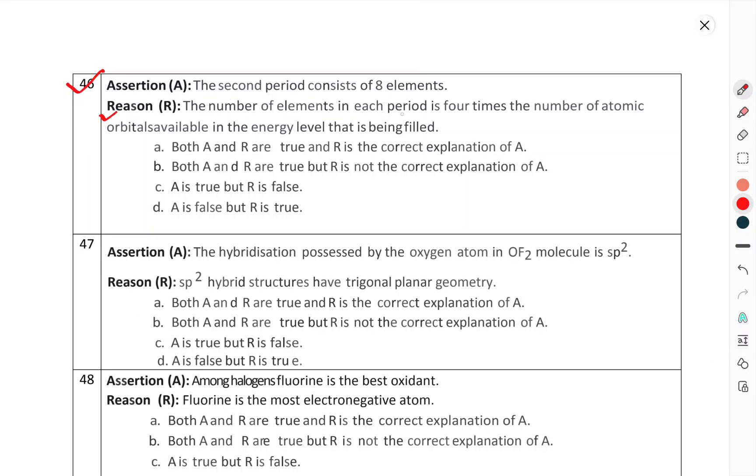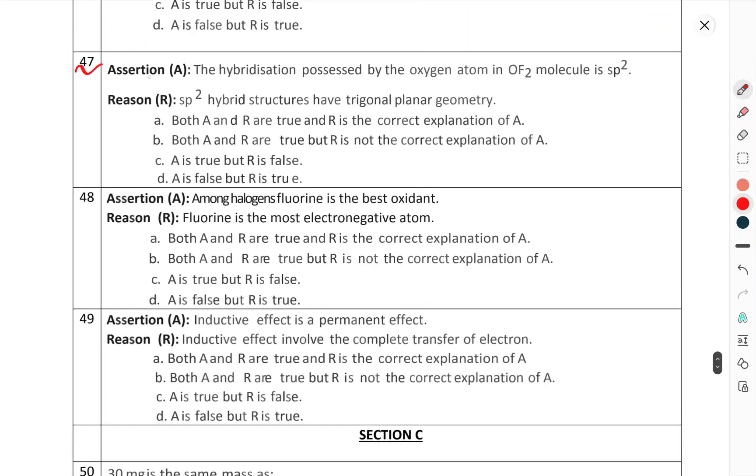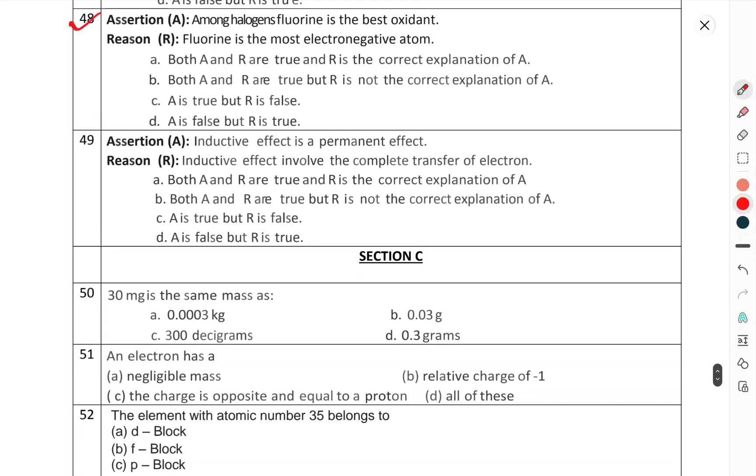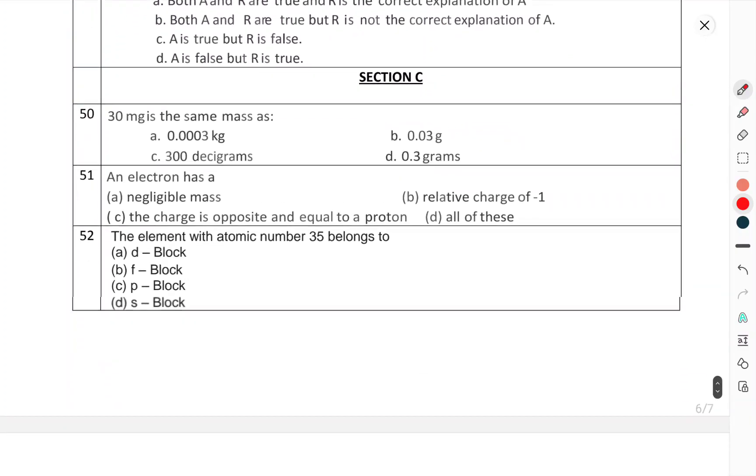Reason - The number of elements in each period is four times the number of atomic orbitals available in the energy level that is being filled. Question number 47: Assertion - The hybridization possessed by the oxygen atom in OF2 molecule is sp3. Reason - sp2 hybrid structures have trigonal planar geometry. Question number 48: Among the halogens, fluorine is the best oxidant. Reason - Fluorine is the most electronegative atom. Question number 49: Inductive effect is a permanent effect. Reason - The inductive effect involves the complete transfer of electrons.